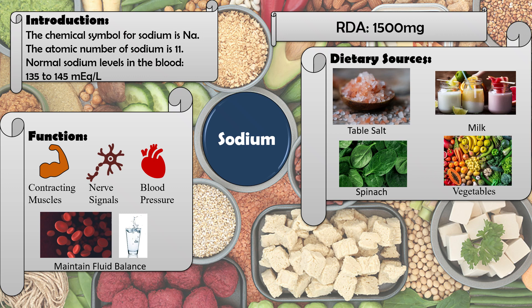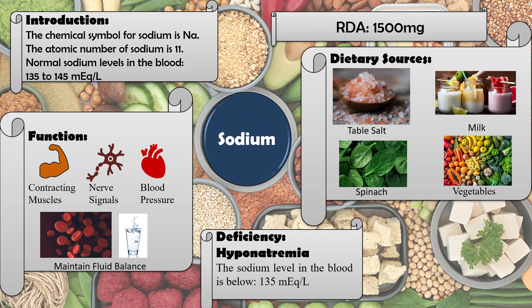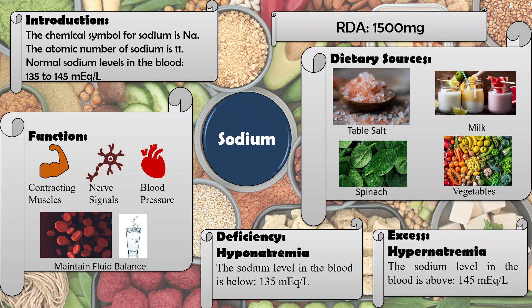If dietary sodium intake is insufficient, it leads to hyponatremia, where sodium levels fall below 135 mEq/L. If sodium intake is excess or elevated due to certain medications or diseases, the condition where sodium exceeds 145 mEq/L is also referred to in terms of abnormal sodium levels in the blood.